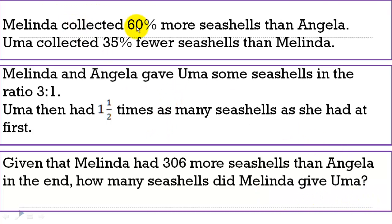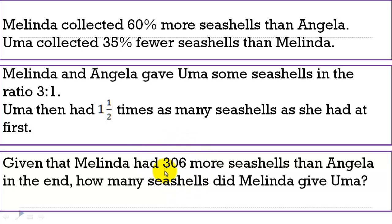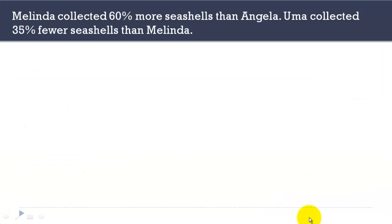This is about comparison. We know the final state for one of the people — Uma. So we can actually compare what she had at first to what she had in the end. This is the magic number we are looking for — the only information that is going to tie in all the others to find the answers.